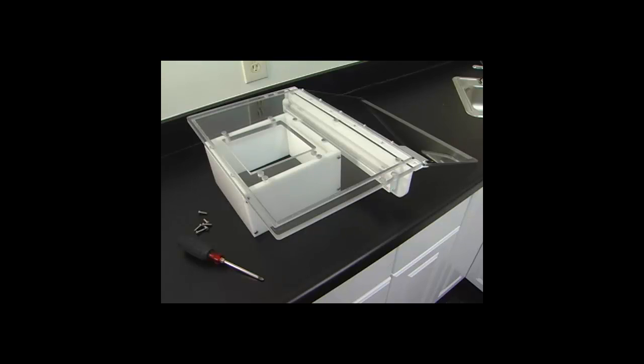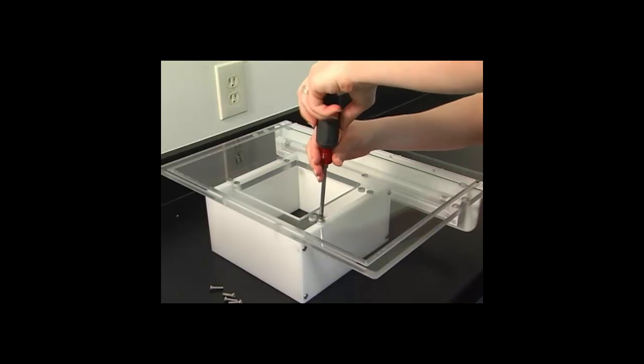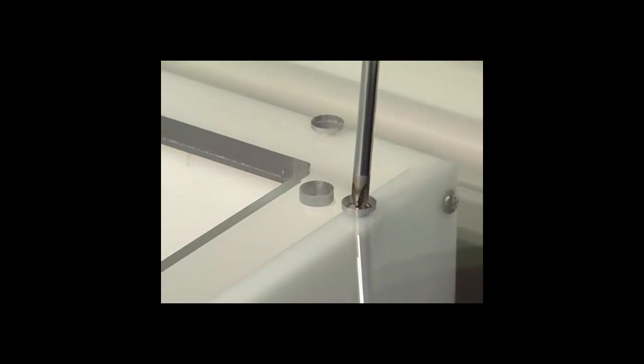Next you will need to screw the square filter box onto the top panel with six screws. This should be on the same side of the panel as the support bar.